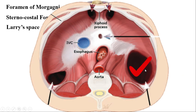Unlike Bochdalek hernia, which usually occurs on the left side, Morgagni hernia usually takes place on the right side. Herniation through this gap is very uncommon and may occur if the foramen becomes too dilated or if intra-abdominal pressure becomes too high, but this is very rare.